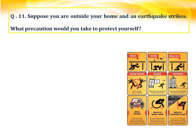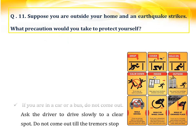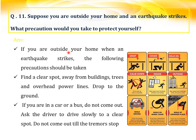Question number eleven: suppose you are outside your house and an earthquake strikes — what precautions would you take to protect yourself? Find a clear spot away from buildings, trees, and overhead power lines, and drop to the ground. If you are in a car or a bus, do not come out; ask the driver to drive slowly to a clear spot and do not come out until the tremors stop.